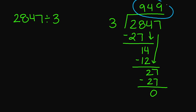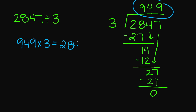This is my quotient here with no remainders. So I'm going to multiply 949 times 3 to check my answer, and I'm going to get 2,847, which is the same as your dividend.